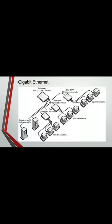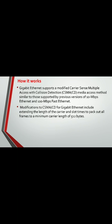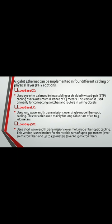Here is the diagram of Gigabit Ethernet workstations — there are three workstations as you can see in the figure. Gigabit Ethernet supports a modified CSMA/CD media access method similar to those supported by previous versions of 10 Mbps Ethernet and 100 Mbps Fast Ethernet. Modifications to CSMA/CD for Gigabit Ethernet include extending the length of the carrier and slot times to pad all frames to a minimum carrier length of 512 bytes.